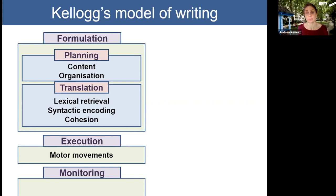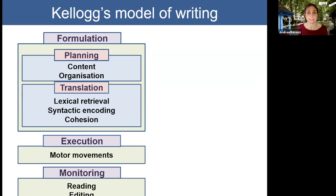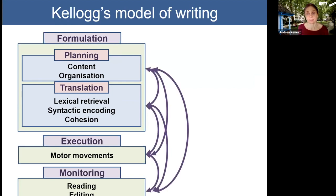Formulation involves planning the content of the written piece and also translating ideas into linguistic form, which entails sub-processes of lexical retrieval, syntactic encoding, and expression of cohesion. In the execution stage, motor movements are employed to produce either a handwritten or typed text. Finally, monitoring involves ensuring that the resulting text is an adequate expression of the writer's intended content.